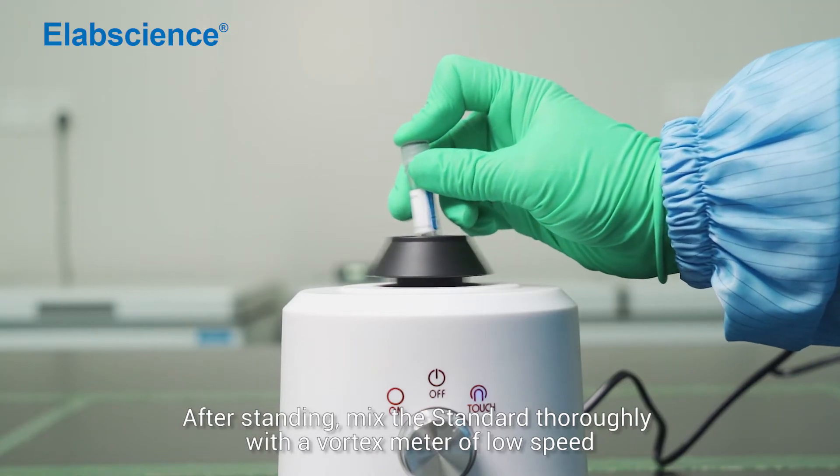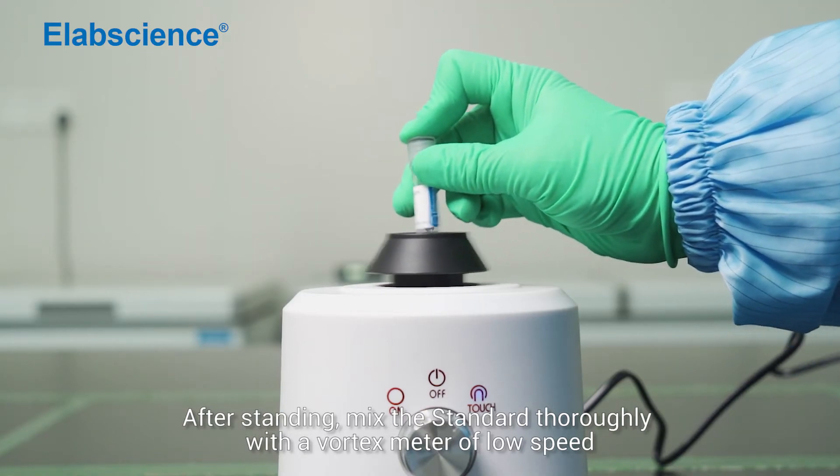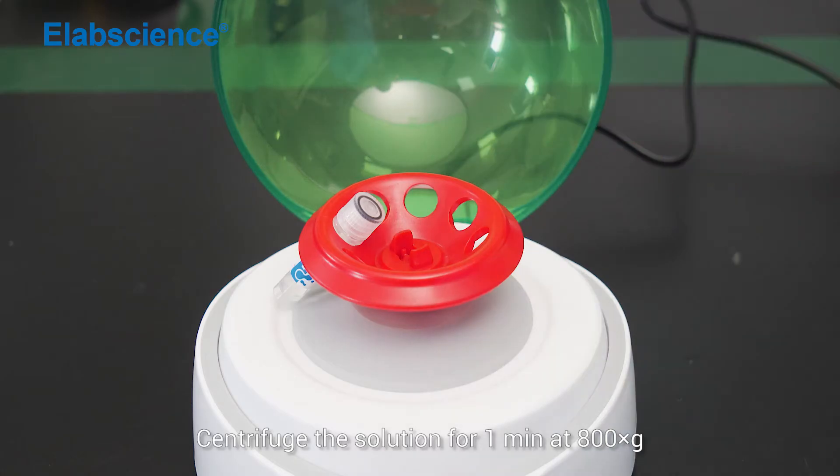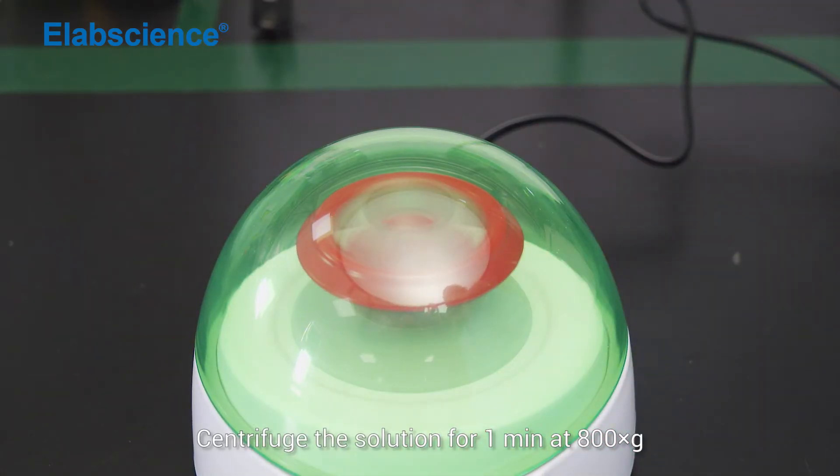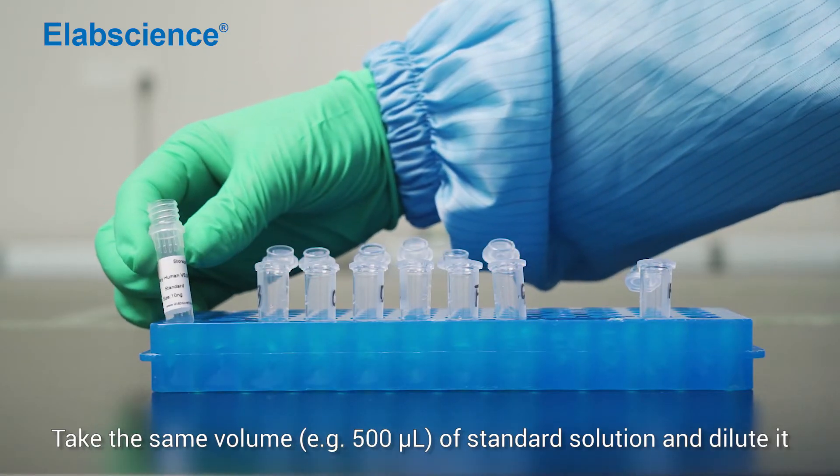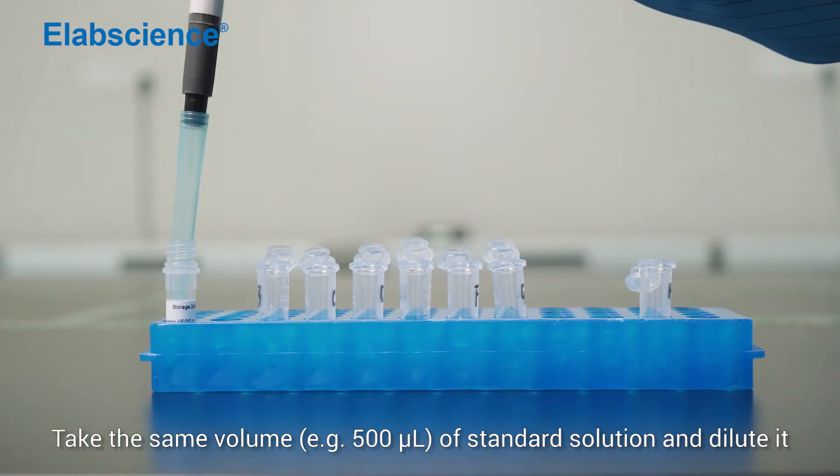After standing, mix the standard thoroughly with a vortex meter at low speed. Centrifuge the solution for 1 minute at 800 times gravity. Take the same volume, like 500 µL, of standard solution and dilute it.